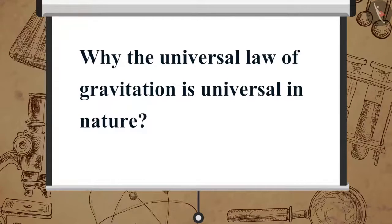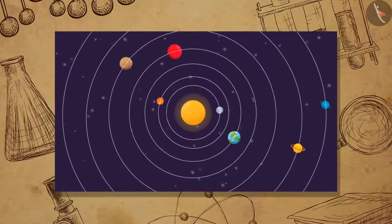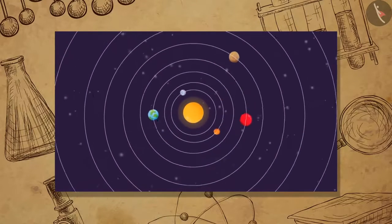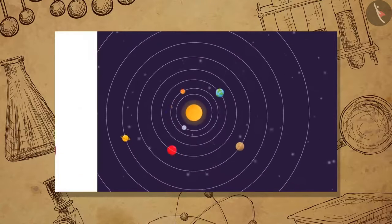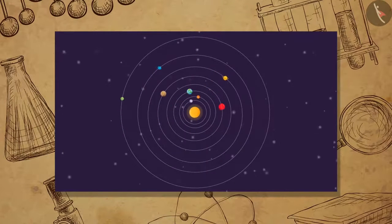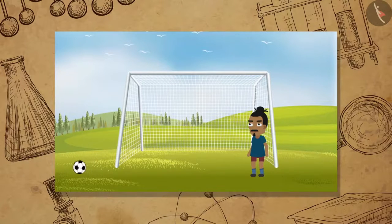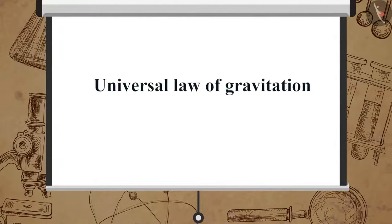Now can you tell why the universal law of gravitation is universal in nature? It is because the law is applicable to all the bodies in the universe. Whether the bodies are big or small, whether terrestrial or celestial, the law applies to all. Now, let us understand what exactly is the universal law of gravitation.